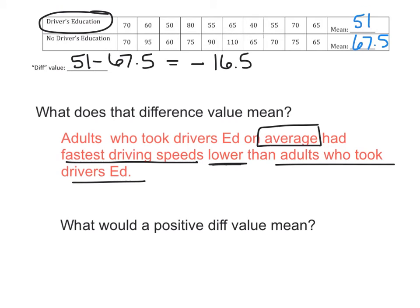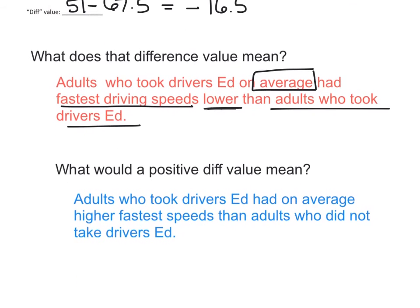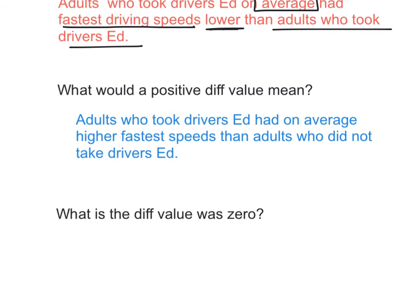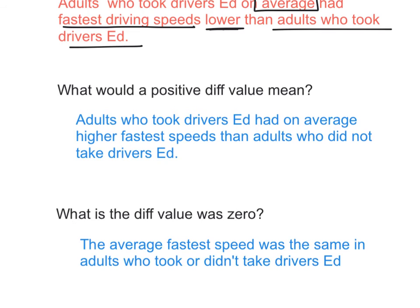So let me pose another question. What if I reorganize them, I reseparate them into two groups. What would a positive diff value mean? This time I would say adults who took driver's ed on average had higher fastest speeds than adults who did not take driver's ed. And lastly, what if the diff value ended up being zero? Then I would just say the average fastest speed was the same in adults who took or didn't take driver's ed.